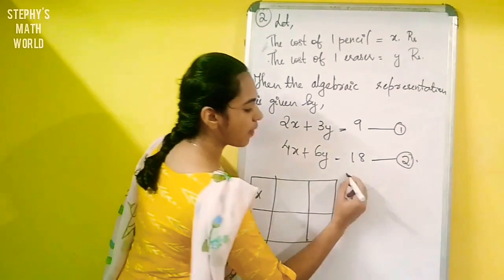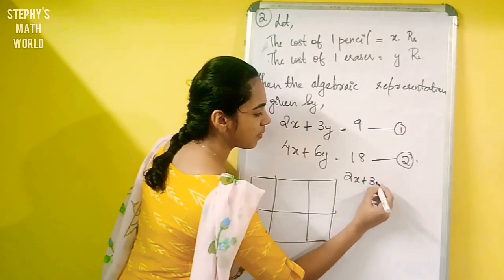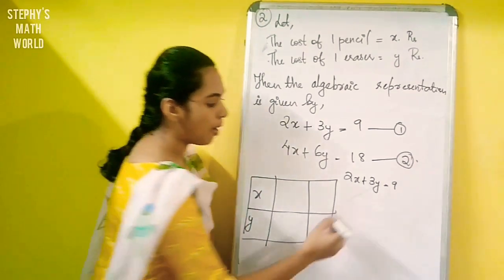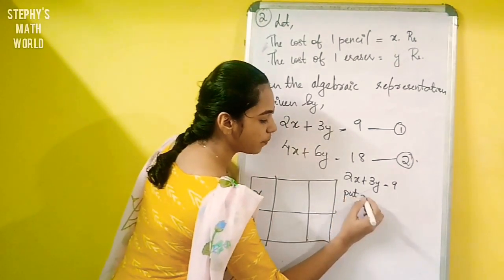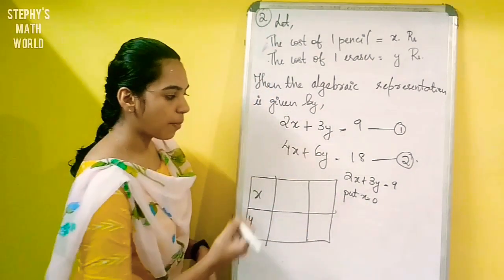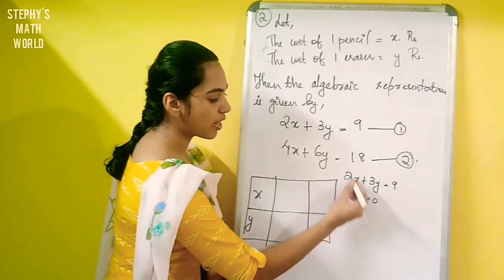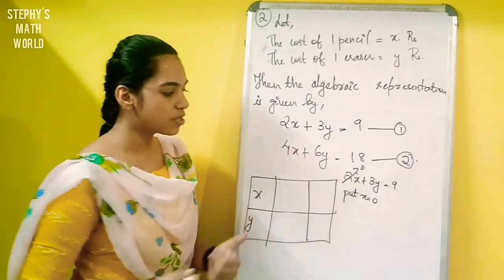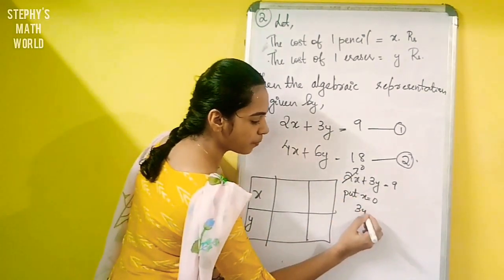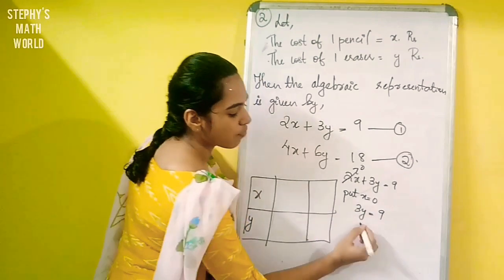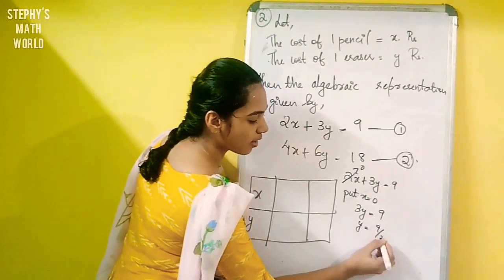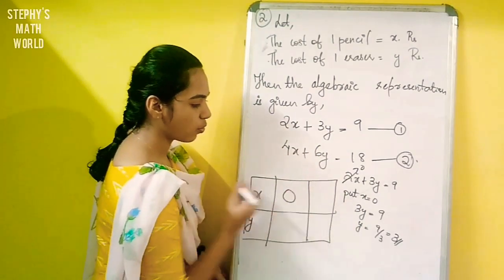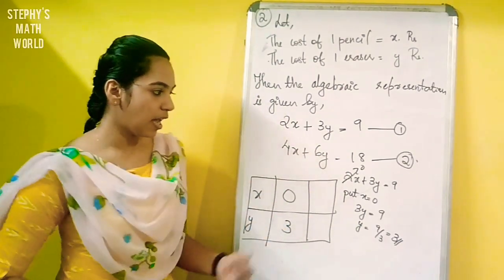First equation: 2x plus 3y is equal to 9. Now put x equal to 0. If x is equal to 0, then 2 times 0 is equal to 0, so 3y equals 9. Therefore y is equal to 9 divided by 3, which is y equal to 3. So if x is equal to 0, then y is equal to 3.